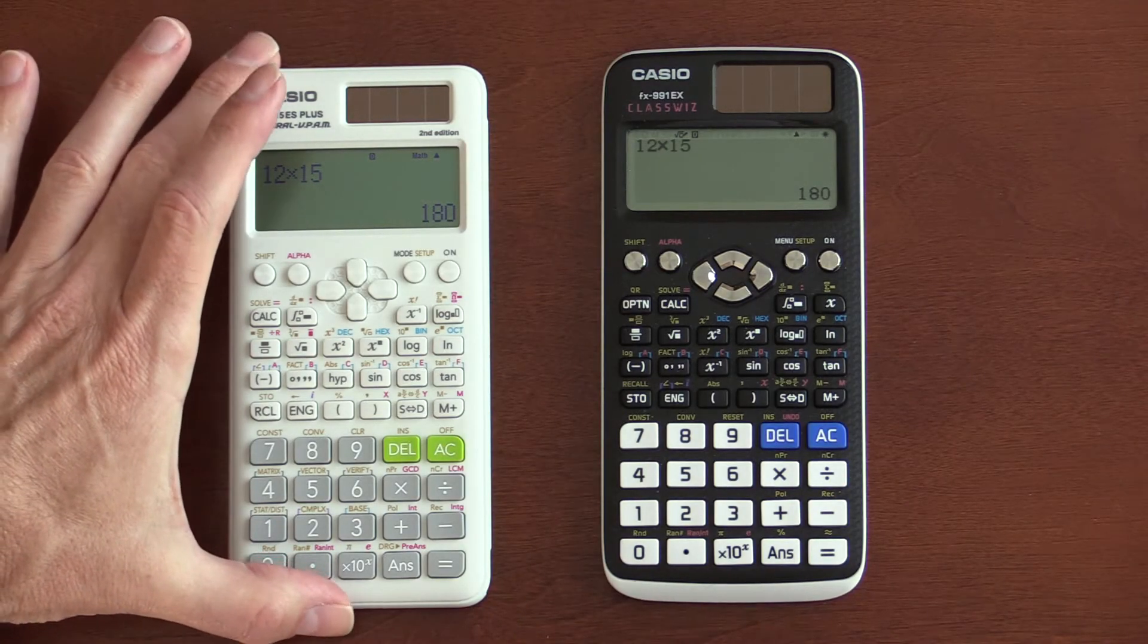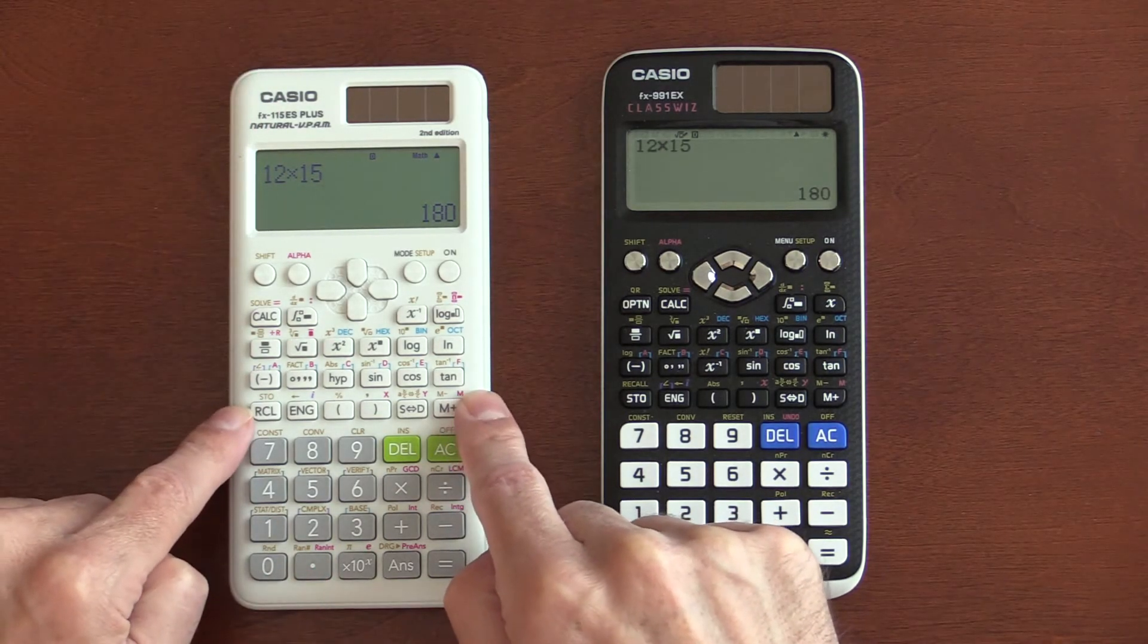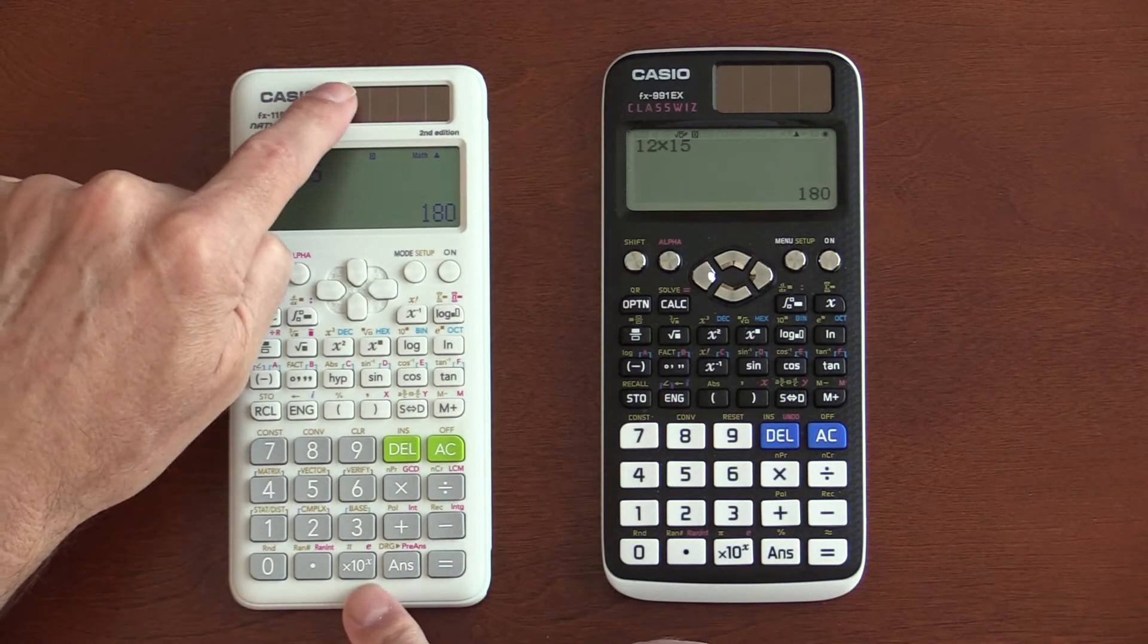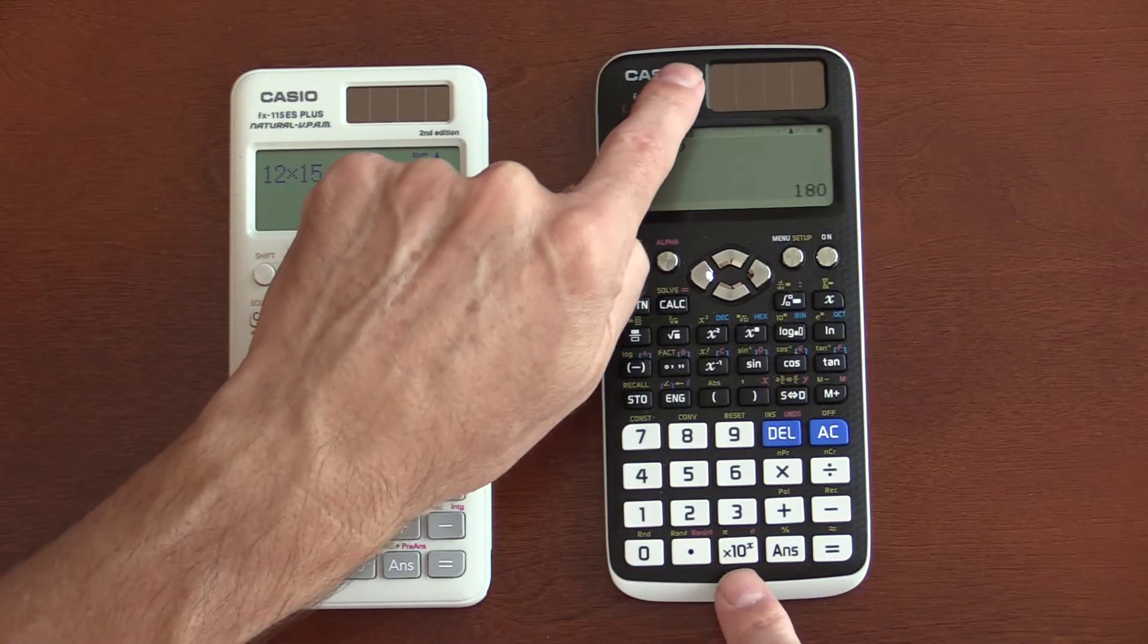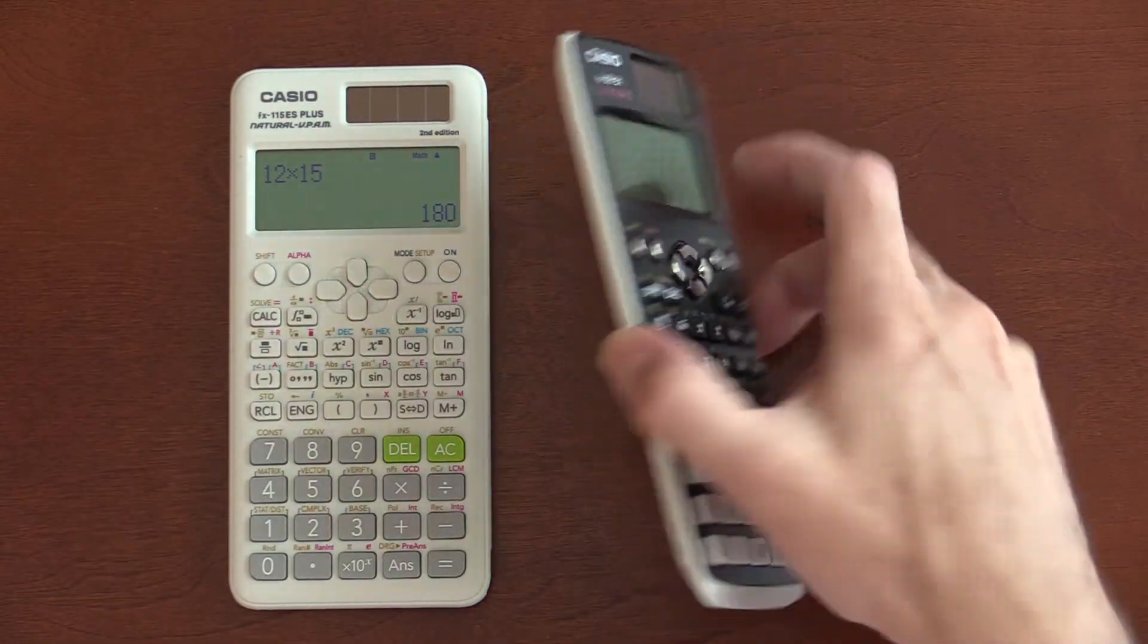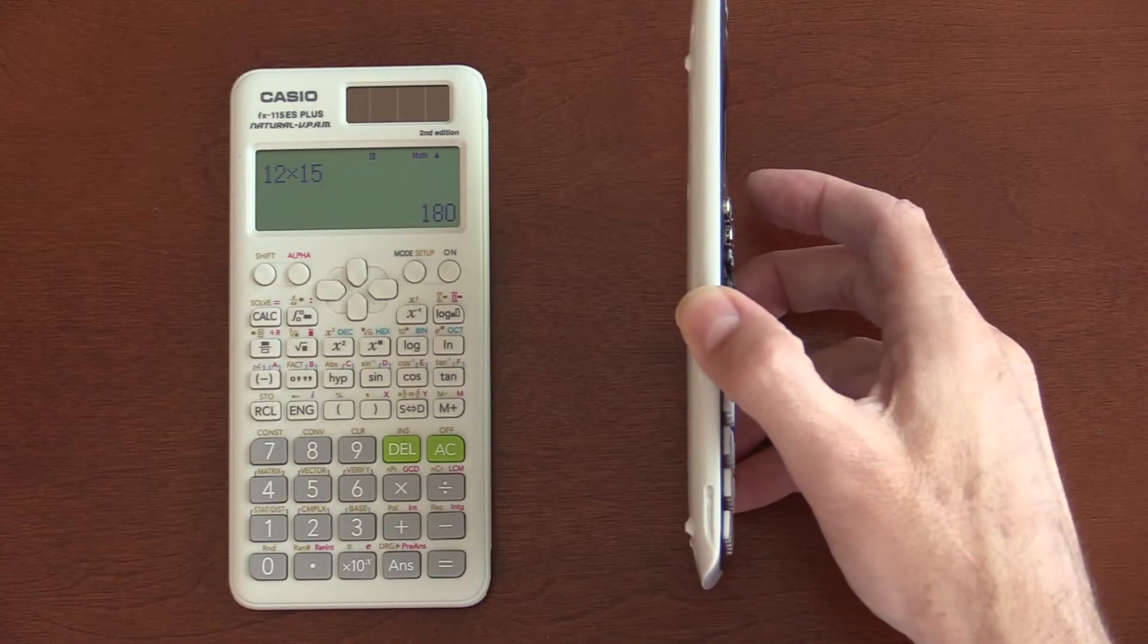The ES actually sits flat, so when you type on it, it doesn't rock from side to side. This one does, and it's annoying. I think it's in part due to the fact that this has a curved shape.